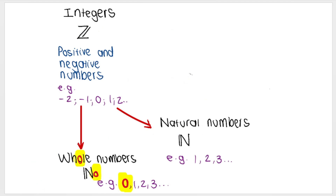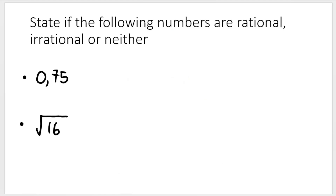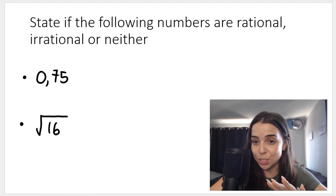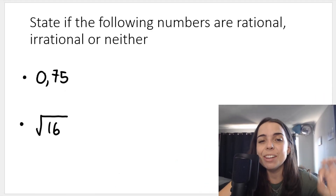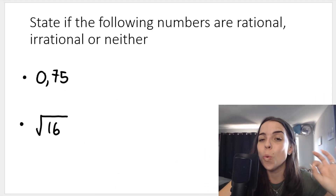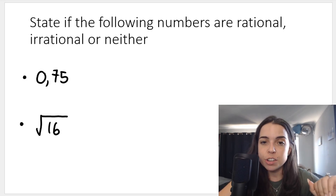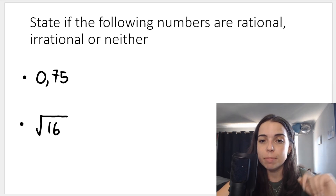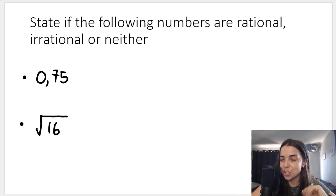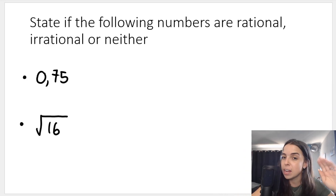This video is to actually practice. So state if the following numbers are rational, irrational, or neither. Remember, a rational number can be written as a fraction in the form of a over b.